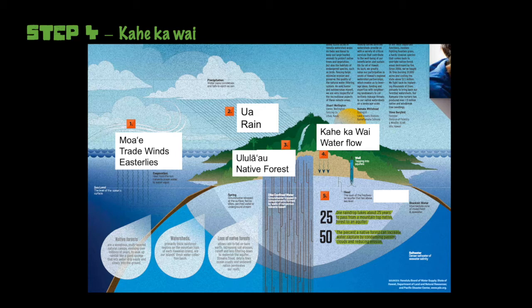When we don't have healthy native forests, rainwater doesn't get channeled underground as much. Instead, it becomes surface water, which creates lots of runoff and erosion that gets sent directly into our oceans. You can learn more about what happens after the loss of native forests in this raindrop here.